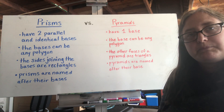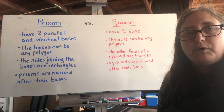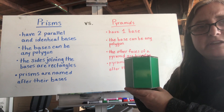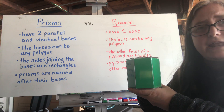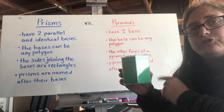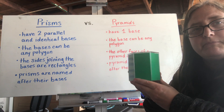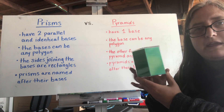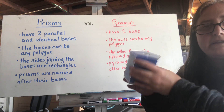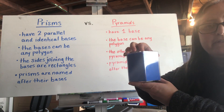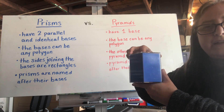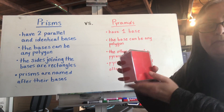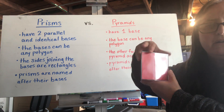Another thing that distinguishes prisms and pyramids is what the other sides actually form. In a prism, the bases can be absolutely any shape, but all the adjoining shapes in the middle of every prism are rectangles. Here's another one — pentagon and a pentagon base, but everything in the middle, as I twist it, you can see all those middle sides are rectangles. And another one — triangle top and bottom, but all the middle pieces are rectangles.